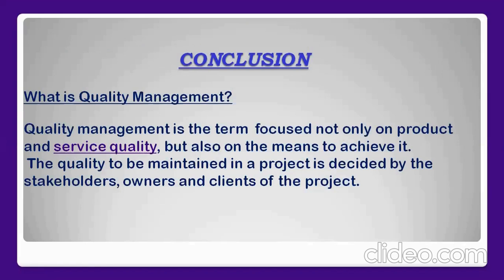In conclusion, quality management is a term focused not only on product and service quality, but also on the means to achieve it. The quality to be maintained in a project is decided by the stakeholders, owners, and clients of the project. Quality management is not a term that only focuses on what output is getting to the customer, but covers all the processes and objects responsible for getting that output — involving not only the customer, but also the people who are investing, working for, and taking benefit from that particular thing.